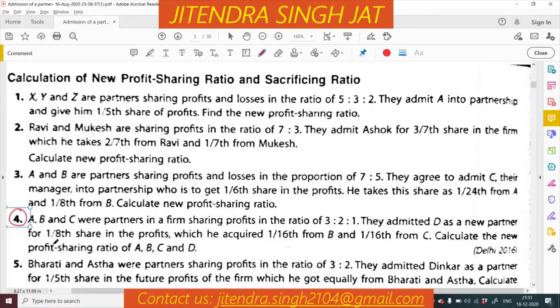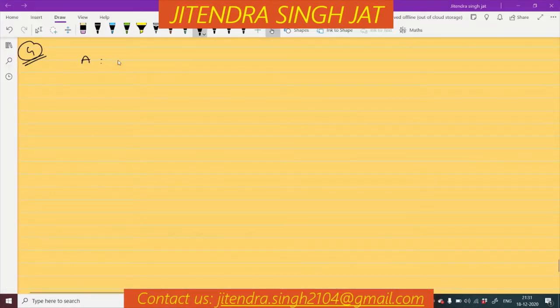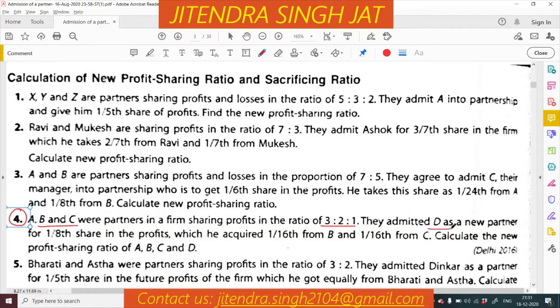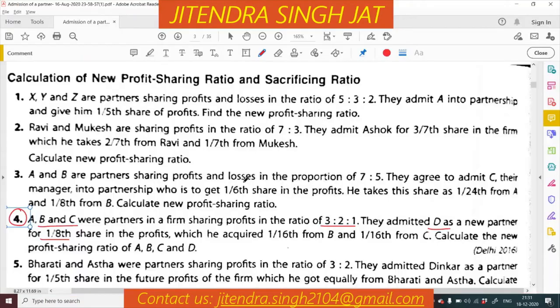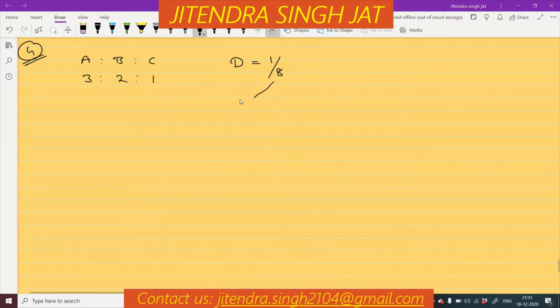Question number 4. A, B and C were partners in a firm sharing profit in the ratio of 3:2:1. They admitted D as a new partner for one-eighth share in the profits, which he acquired one-sixteenth from B and one-sixteenth from C. So he is taking one-sixteenth from B and one-sixteenth from C.